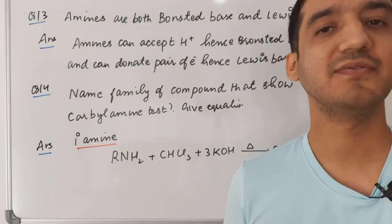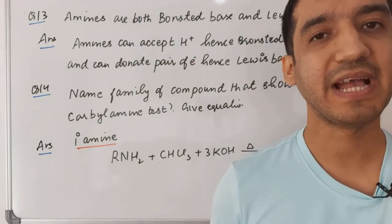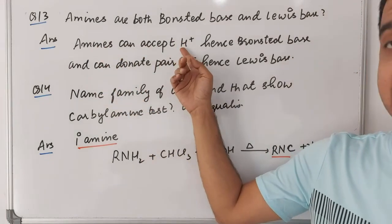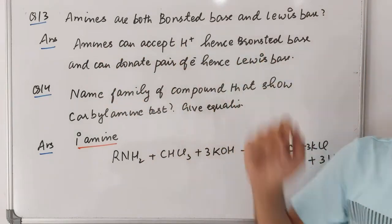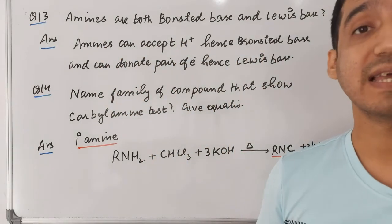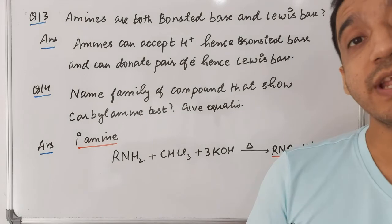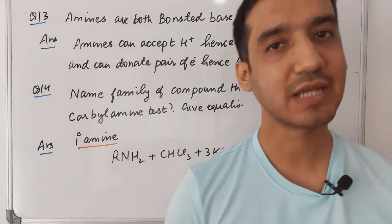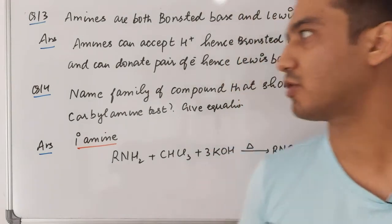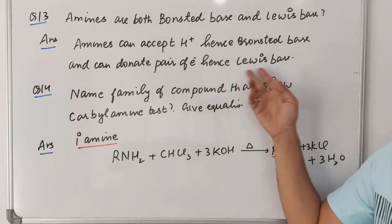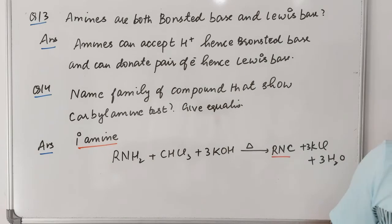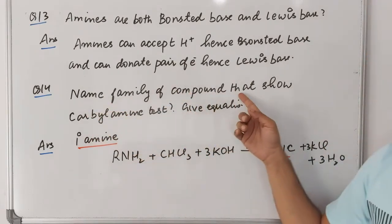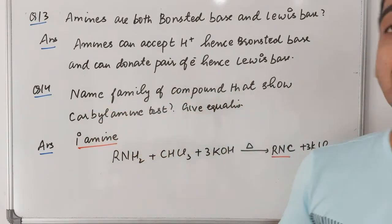Question thirteen: why are amines both Brønsted bases and Lewis bases? Brønsted bases are compounds that can accept H⁺. Amines can accept H⁺, so they are Brønsted bases. They can also donate a lone pair of electrons. A species that donates a pair of electrons is called a Lewis base.